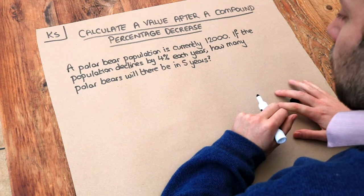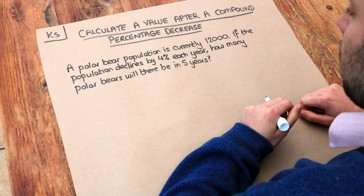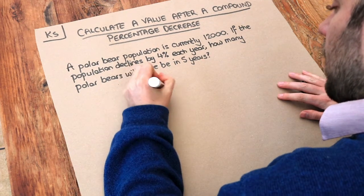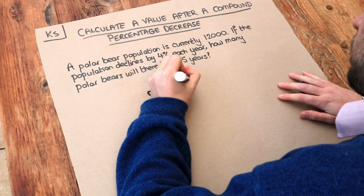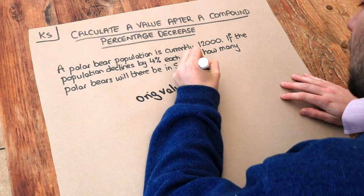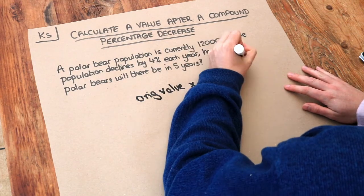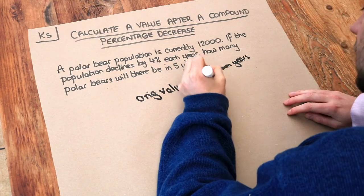Now in the previous video we saw that to find a value after a compound percentage decrease, we start with the original value and we multiply by some decimal multiplier, I'll explain that in a second, to the power of the number of years or the number of months or whatever the time unit is. And that D is a decimal multiplier.